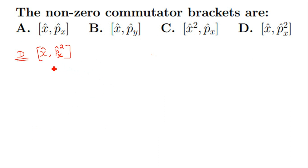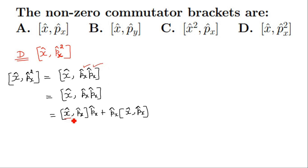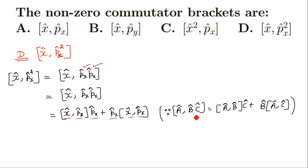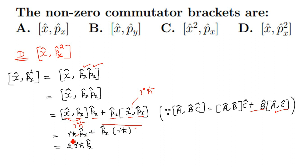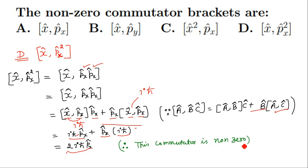For commutator d, [x-cap, p-x-cap²], we write p-x-cap² as p-x-cap times p-x-cap. Using the property [A, BC] = [A,B]C + B[A,C], it expands as [x-cap, p-x-cap] times p-x-cap plus p-x-cap times [x-cap, p-x-cap]. Both commutators equal iota h-cross. Substituting these values gives iota h-cross p-x-cap plus p-x-cap iota h-cross, which equals 2 iota h-cross p-x-cap. So commutator d is also non-zero.